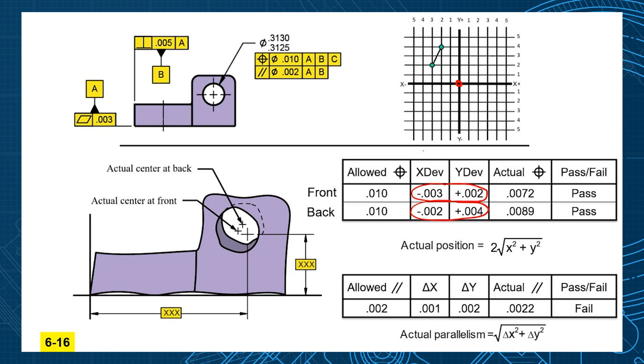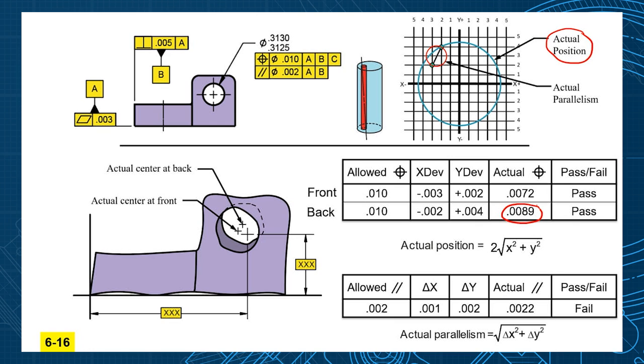So front of the hole was minus three plus two. So minus three plus two. And then the back of the hole was minus two plus four. Now, if you want to look at your position tolerance, that's going to be the smallest zone that stays centered on your true position. That's going to be represented by the blue zone. And that's going to be represented by this 0.0089.